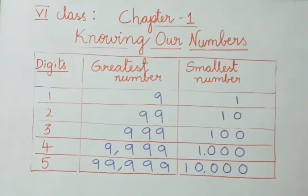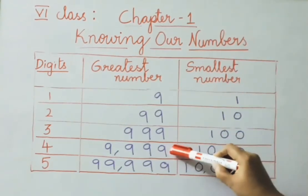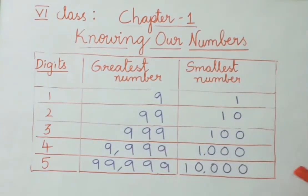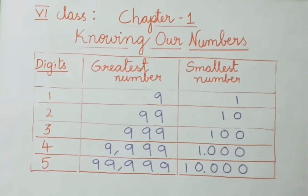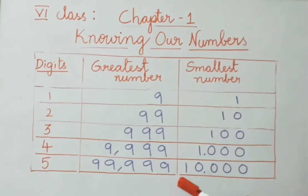A 4-digit number starts with 1000 and ends with 9999, so the smallest is 1000 and the greatest is 9999. A 5-digit number starts with 10,000 and ends with 99,999. Similarly, the smallest 6-digit number is 1,00,000 and the smallest 7-digit number is 10,00,000, and the smallest 8-digit number is 1 crore and so on. The greatest 6-digit number is 9,99,999 and the greatest 7-digit number is 99,99,999.